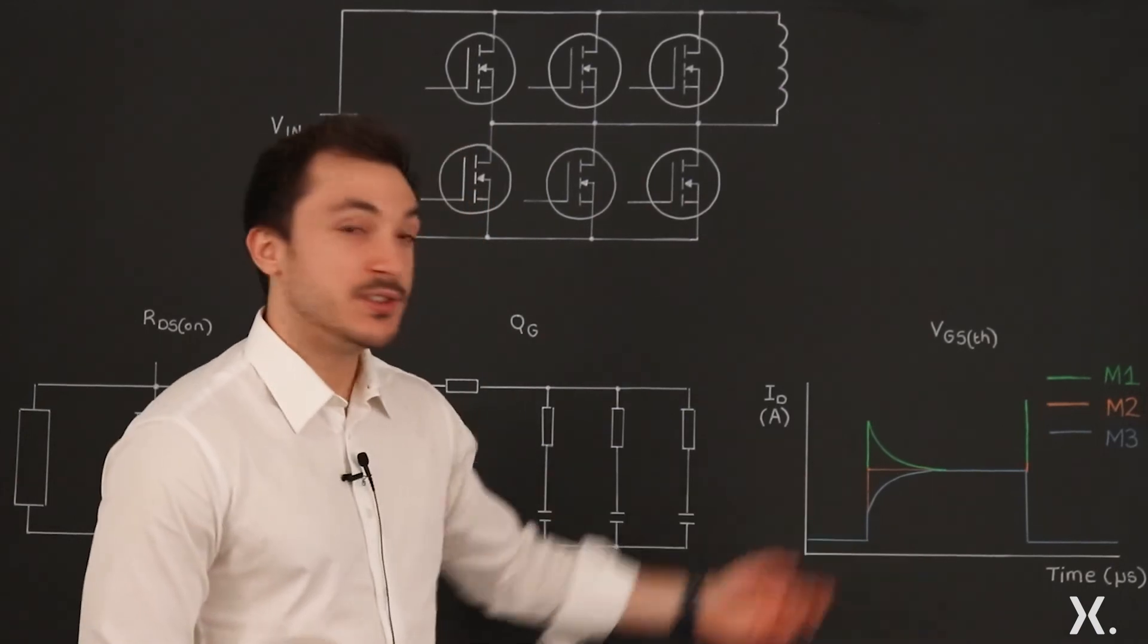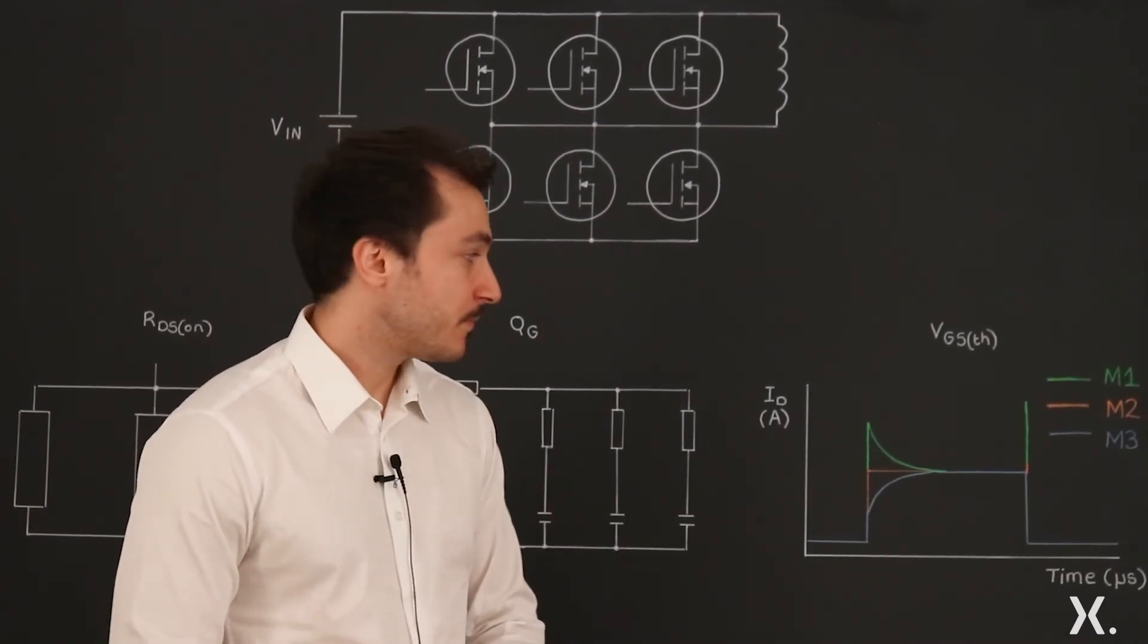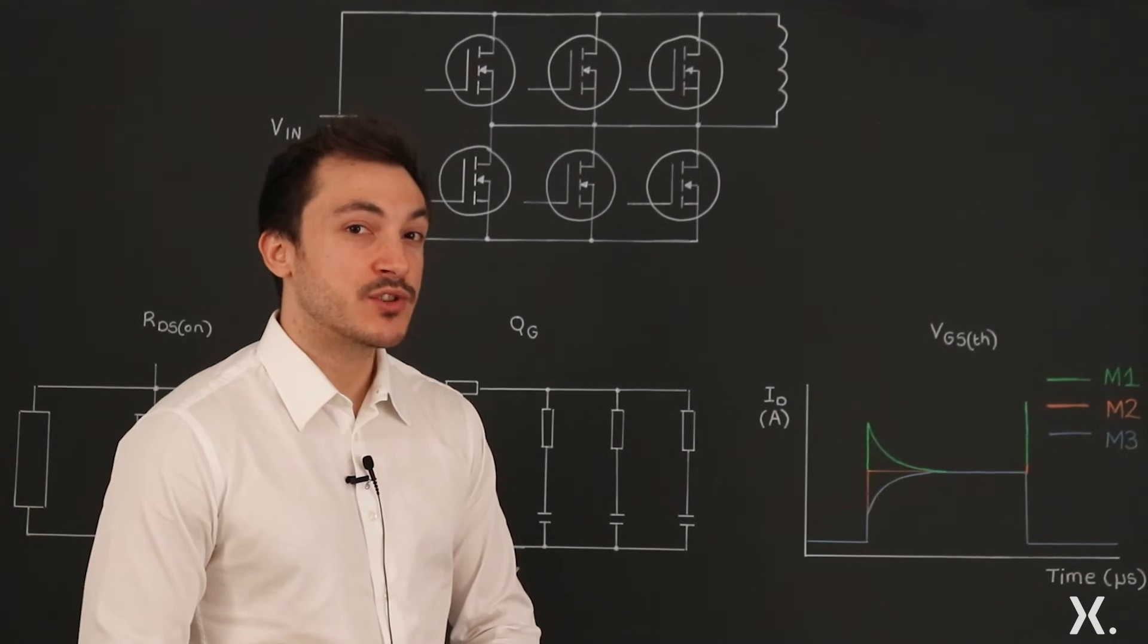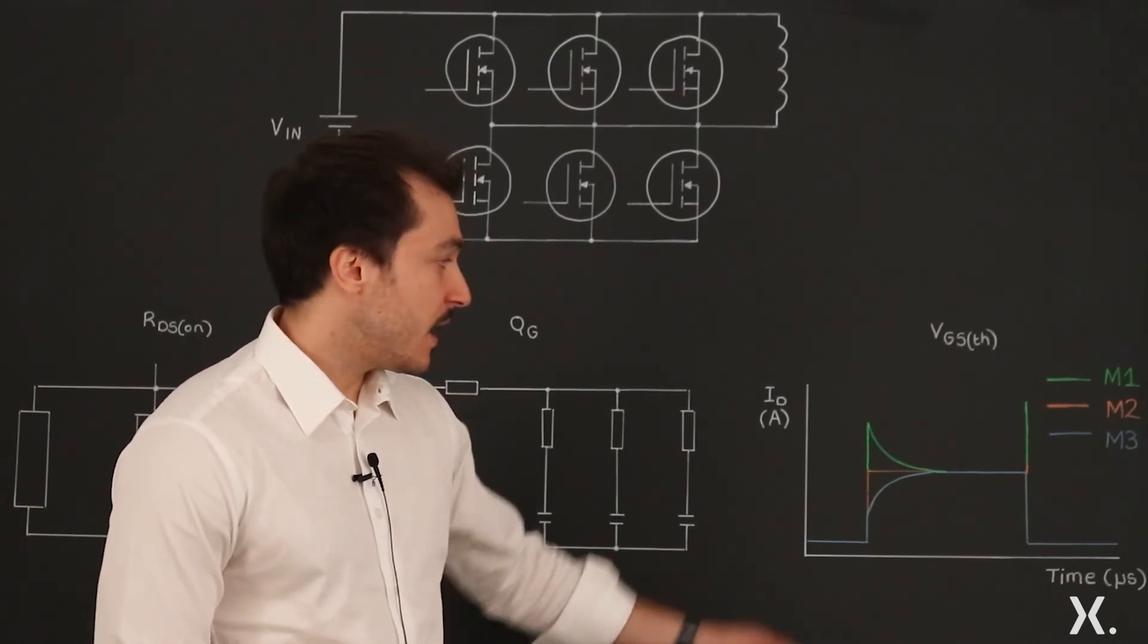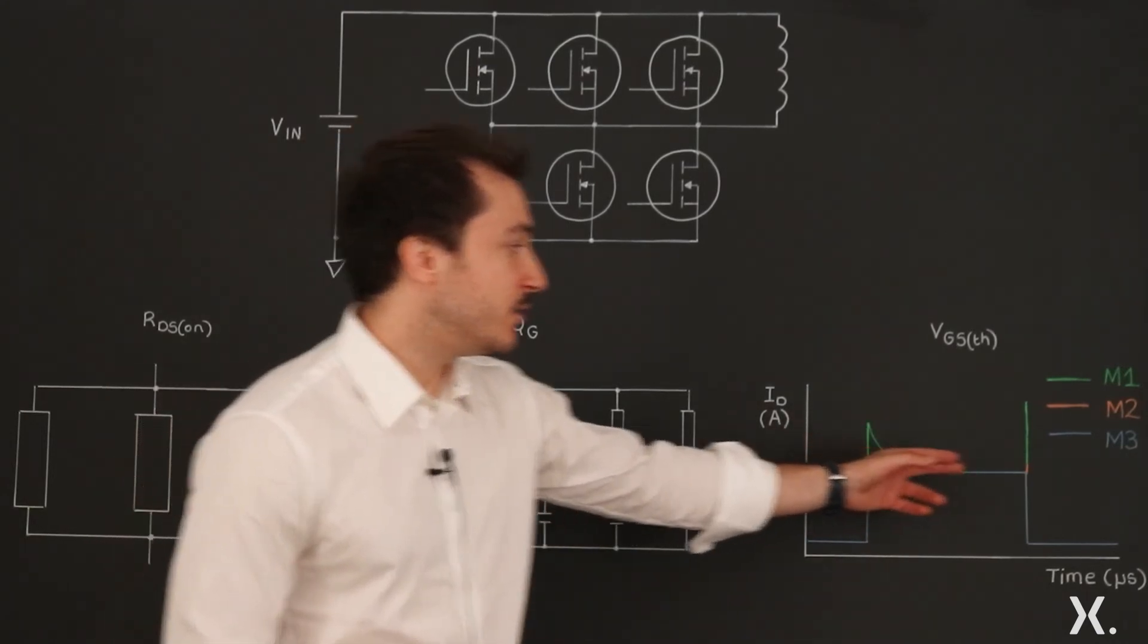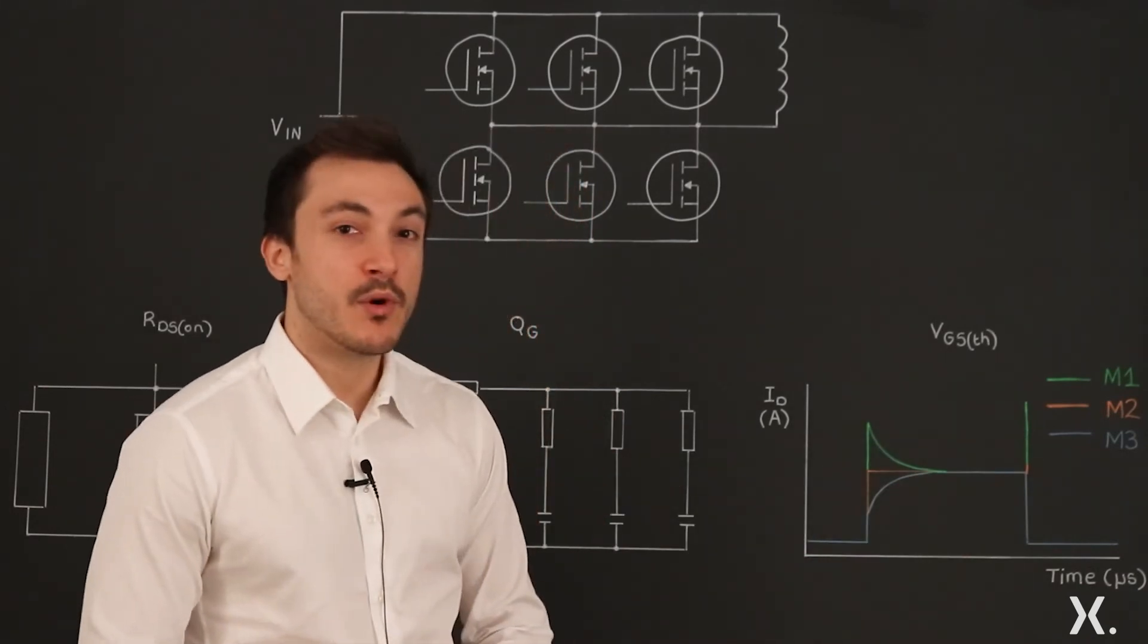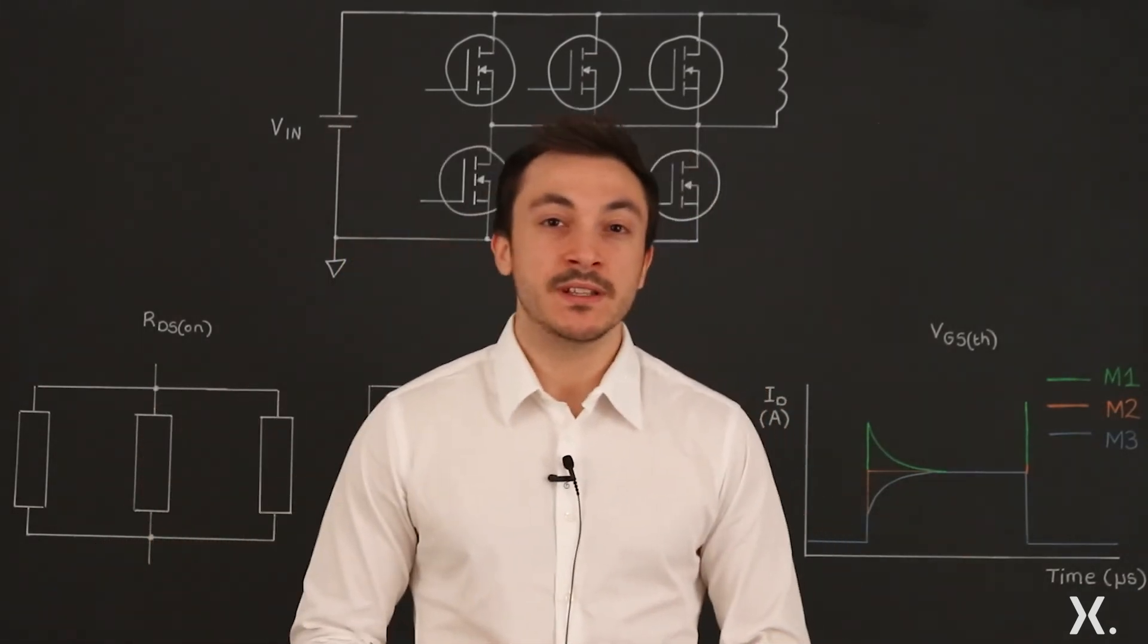However, threshold voltage is the most problematic parameter. In this case, M1 has a lower threshold voltage than the others and will turn on first and turn off last, thus handling more current and increasing its dissipated power.